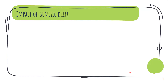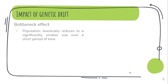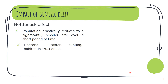Genetic drift has two main effects you need to know: the bottleneck effect and the founder effect — you will be asked many questions on these in competitive exams. The bottleneck effect occurs when a population drastically reduces to a very small number over a short period of time, due to disasters, hunting, or habitat destruction. This leads to a decrease in genetic diversity.